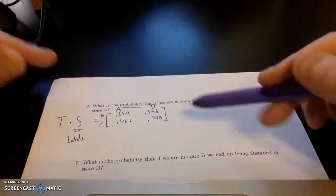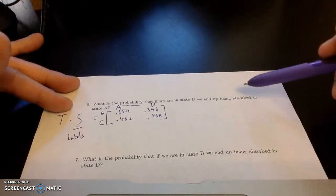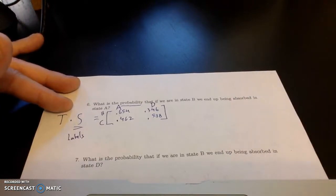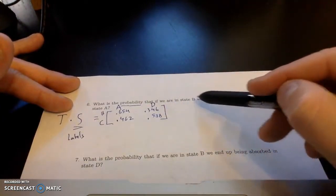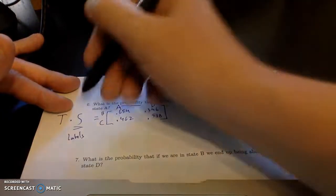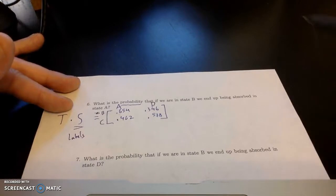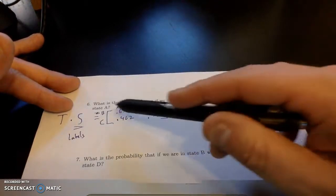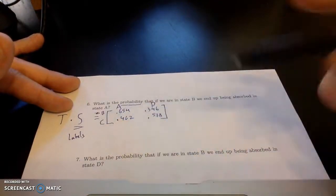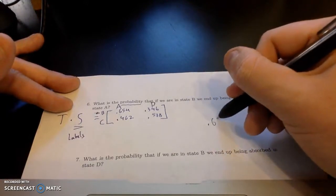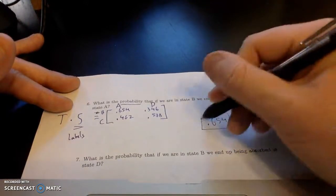All right, and this I think is actually all the hard work. We can answer all these questions now. So I look over here. What's the probability that if we are in state B? So I'm going to think right here. I'm looking at this first row, state B. What's the probability that we end up in state A? Is this 0.654%.